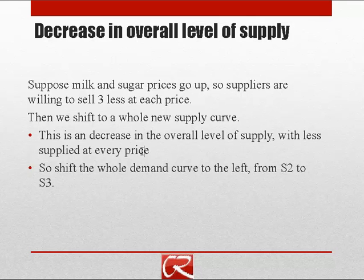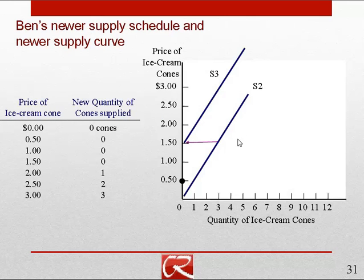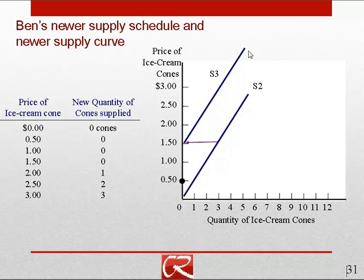Our whole supply curve is going to shift to the left from S2 to S3. There used to be three units supplied at $1.50 — now there's zero. There used to be four supplied at $2 — now there's one, and so on. You can see how when there's less supply at every price, that's a leftward shift of the curve. And again, left is less, right is more.